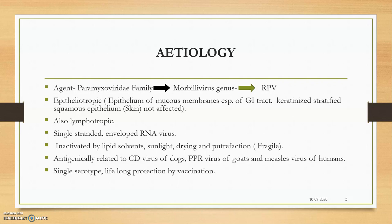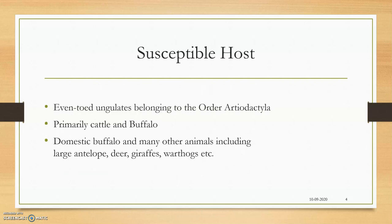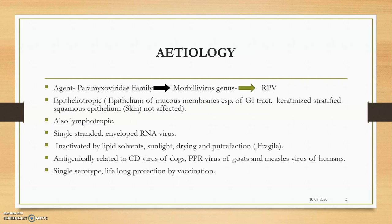Since it belongs to Paramyxoviridae, Rinderpest virus is antigenically related to canine distemper virus, PPR virus (also known as the Rinderpest of small animals), and measles virus of humans — all members of the Morbillivirus genus sharing common antigenic determinants. There is a single serotype, and vaccination provides lifelong protection with no serotype variation.